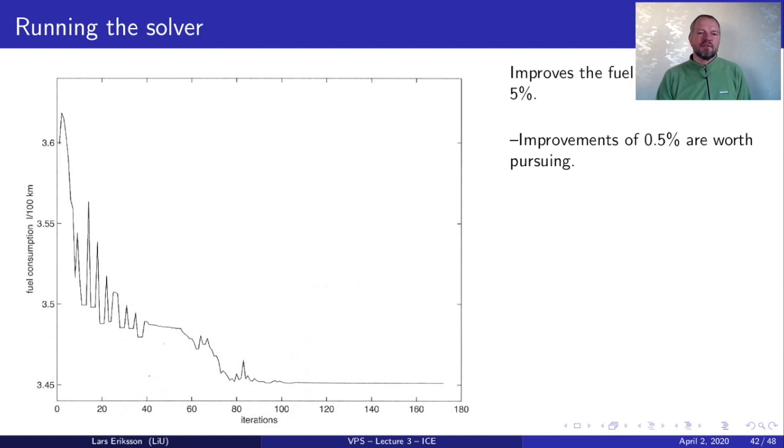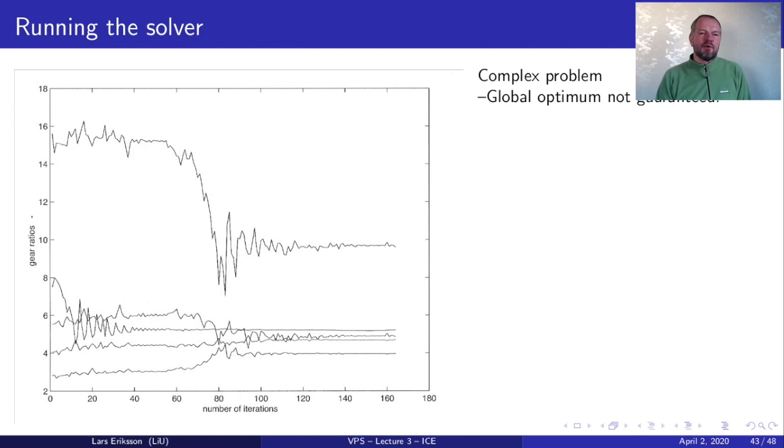The message here is that a lot of work goes into selecting the right gearbox for the vehicle. So there's a lot of design work being done to improve the vehicle fuel consumption. Another view of the results is the analysis of what is the solver doing, how is it modifying the gear ratio. So here we see the gear ratio from gear number one, two, three, four and five. And you can see how it's changing the gear ratios to get the engine operating condition.